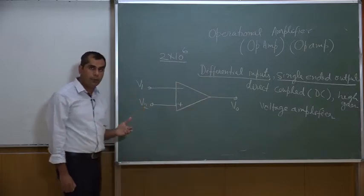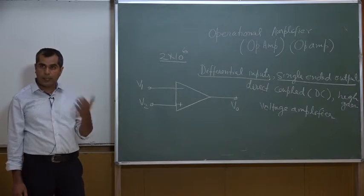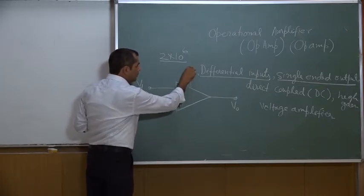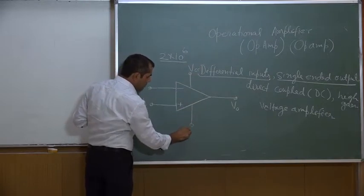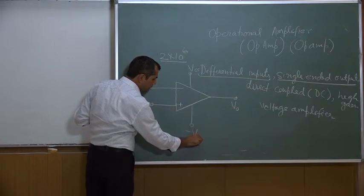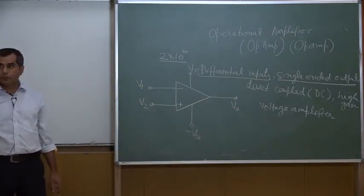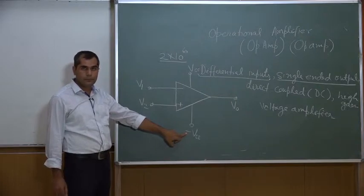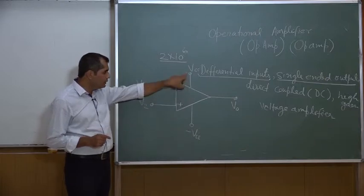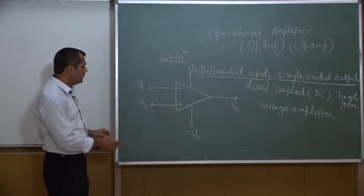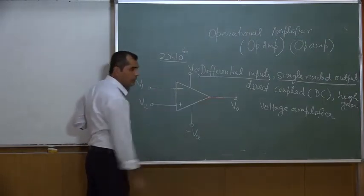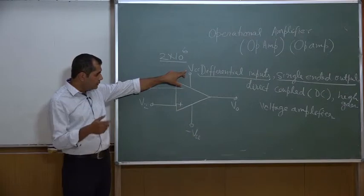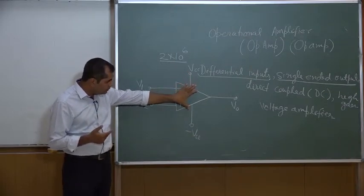For any amplifier there should be a power supply, because the power supply delivers power to the output signal. We will have two power supplies here: one is called VCC and another one is minus VEE or minus VCC. It has a dual power supply, but normally these two terminals are not shown — only the two input terminals and one output terminal are shown.